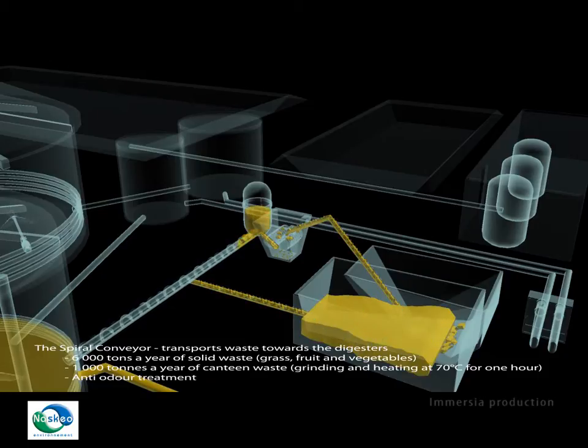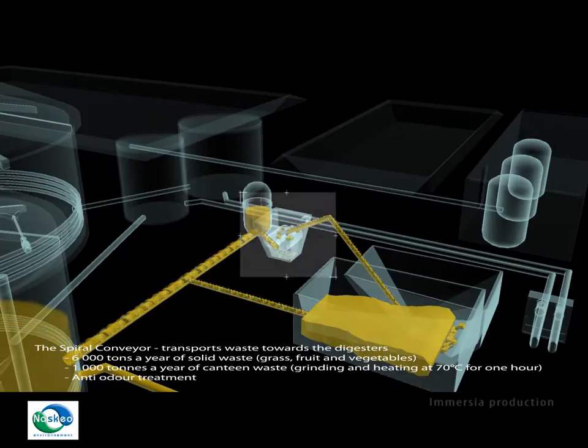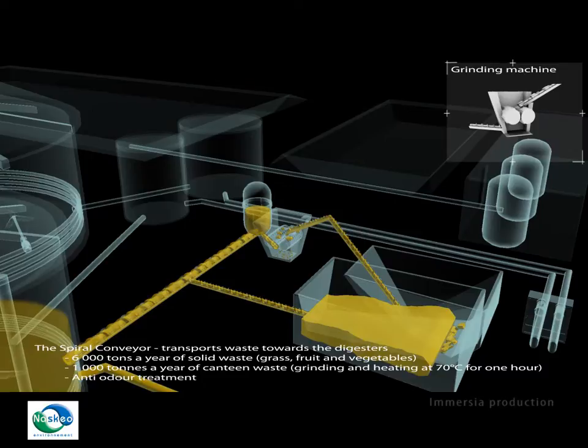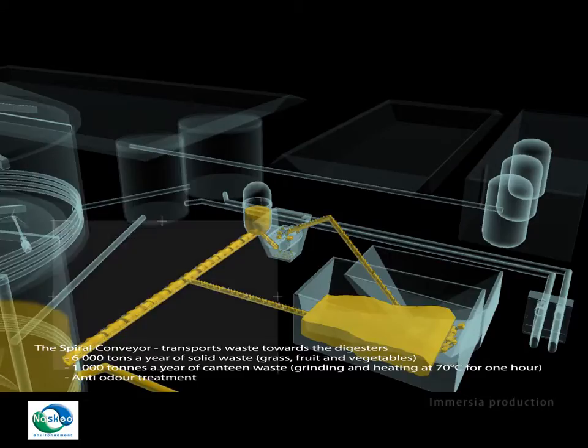Slaughterhouse and canteen waste are transported to the divanning depot and crushed to facilitate anaerobic digestion. They are then treated in a tank heated to 70 degrees Celsius to eliminate pathogenic elements.